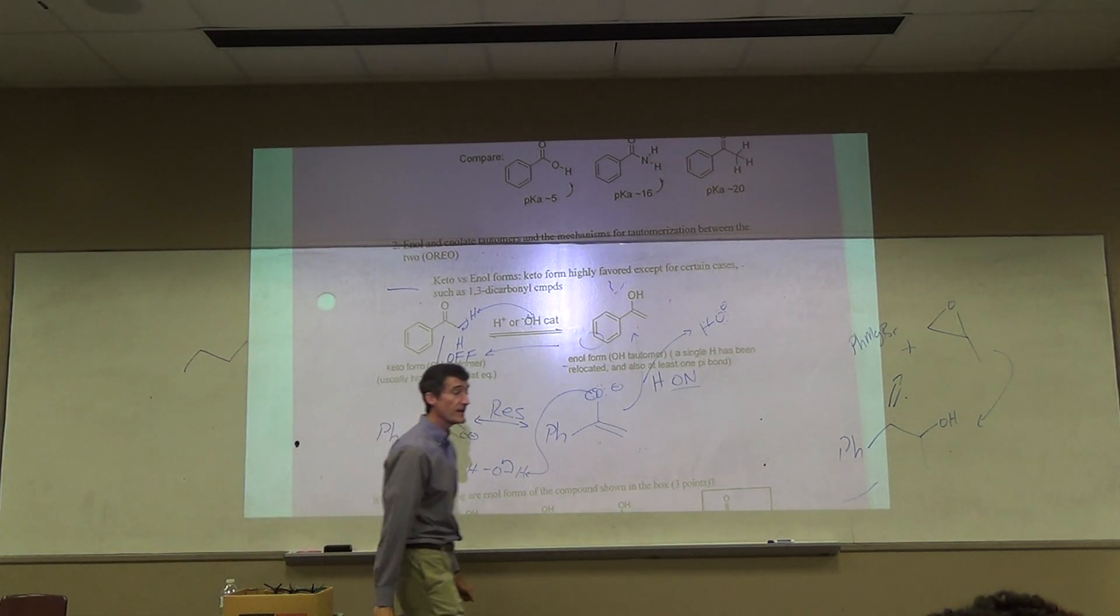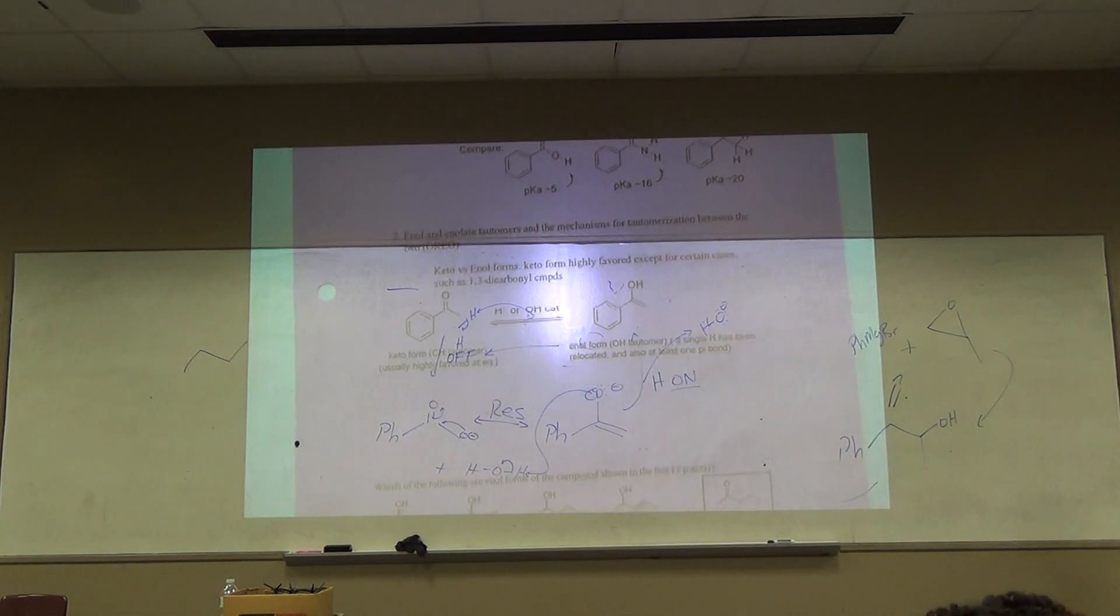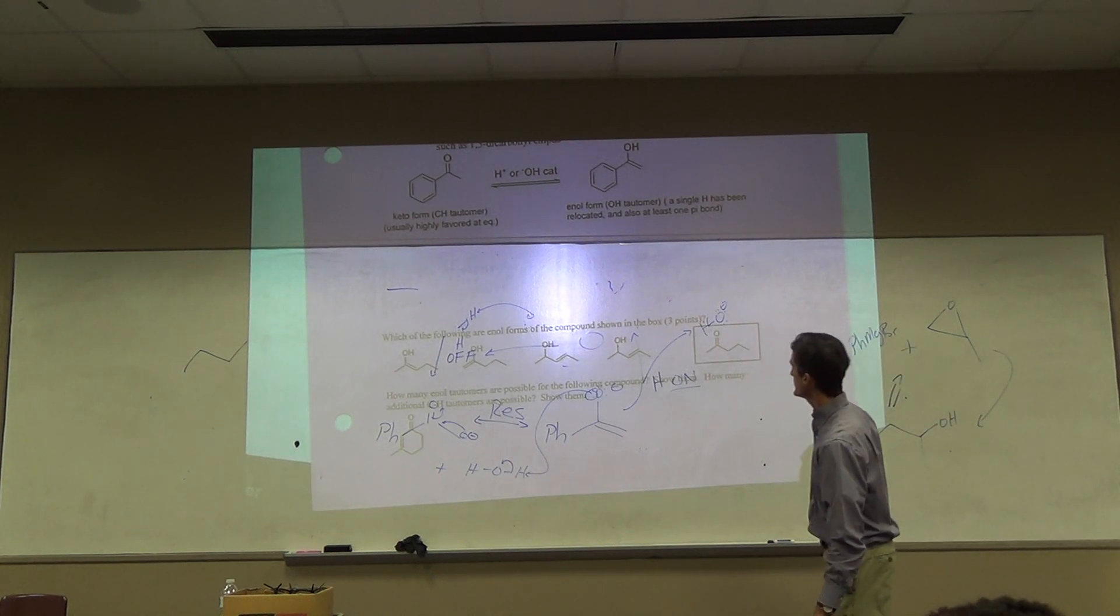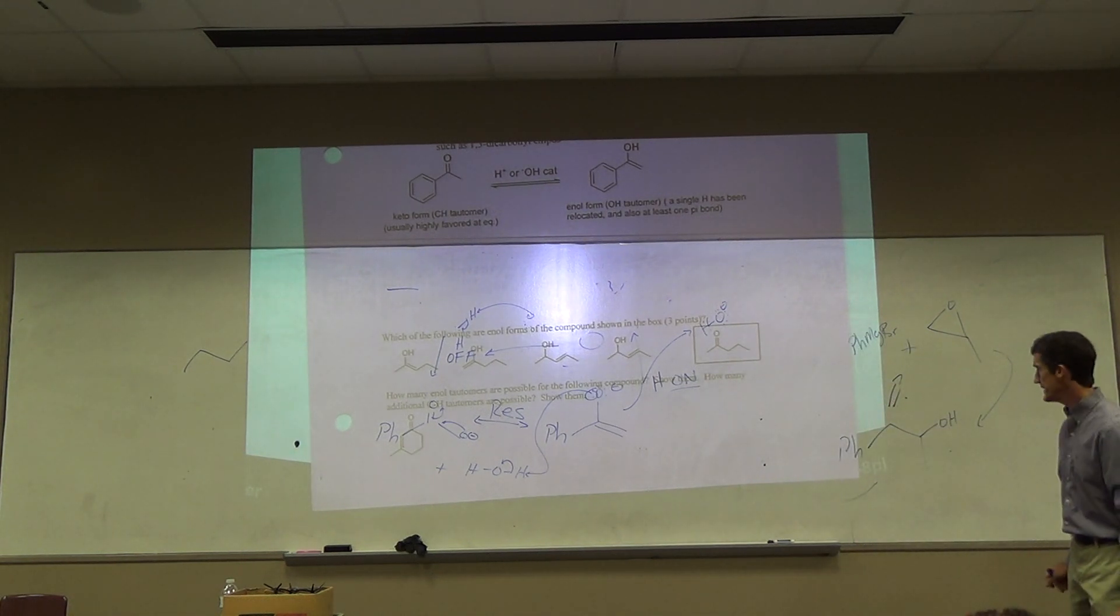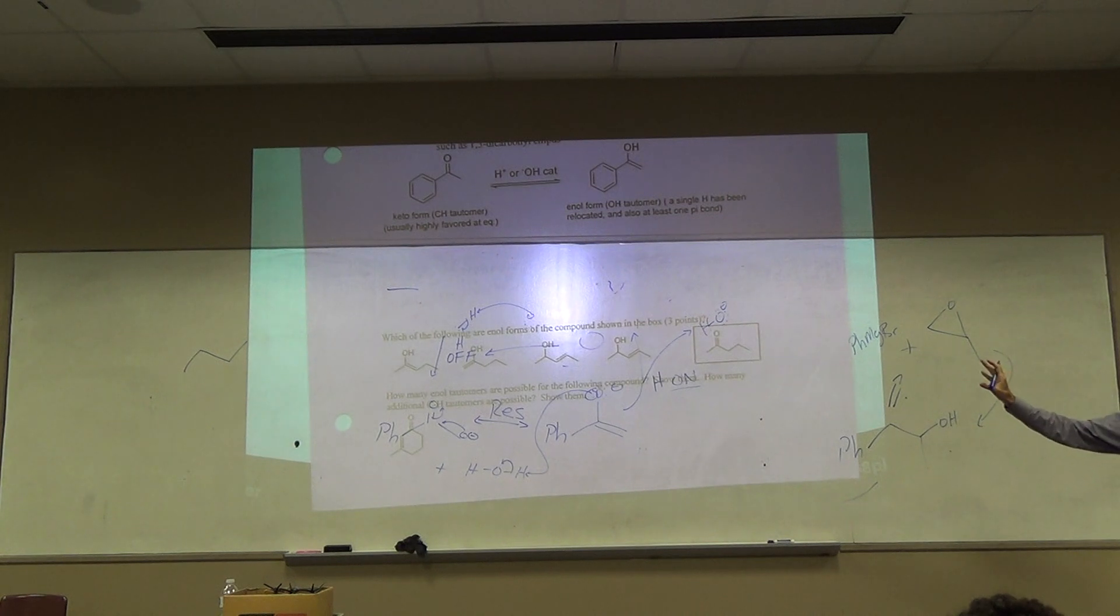There are some cases where enols are more favored than that. Let's see what's next here, question here which of the following are enol forms of the compounds shown in the box. How many enol tautomers are possible? A couple of homework questions there. You take some time to look at those and we'll look back at those later.